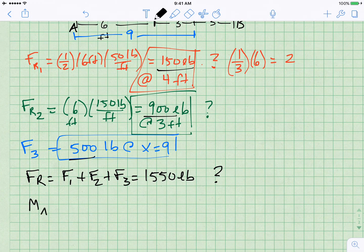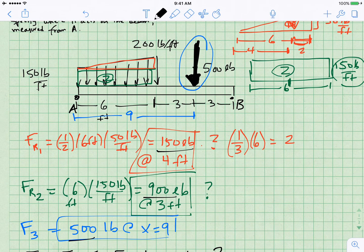The moment at A is going to equal FR, which is 1550 pounds, times whatever this distance is, this x distance, which we're trying to figure out. And if we kind of look back at the diagram and we think about this big force that we're trying to find, in other words, we have some sort of very large FR.